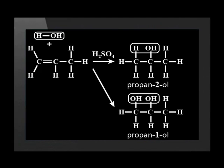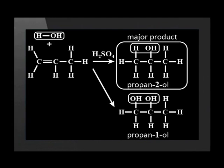So which alcohol is produced in greater quantities? That's right, propan-2-ol with the OH on the second carbon is the preferred product. Sometimes this is called the major product as more of it is made.